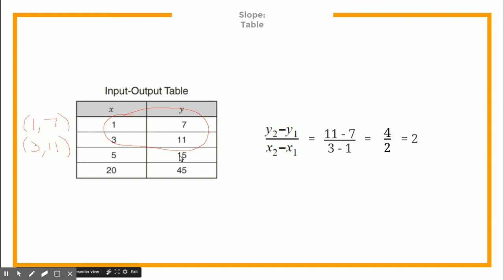The cool thing is, if you chose any other two points from the table, they would give you the same slope — because this is a perfectly linear line, meaning it's a straight line.